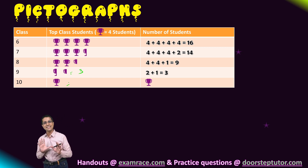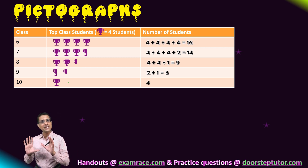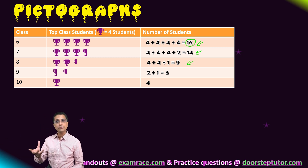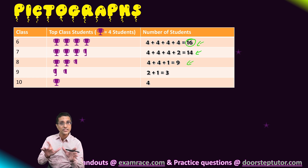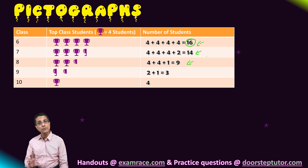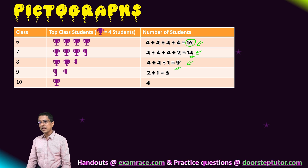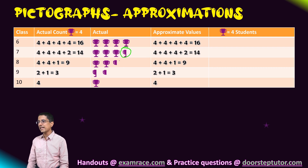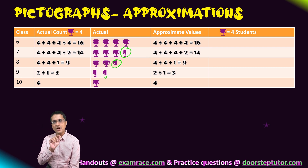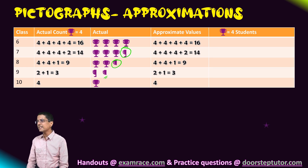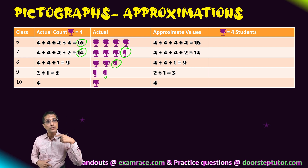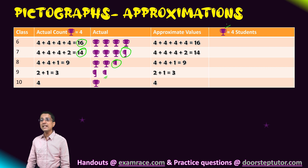The last value is 4, represented by one full trophy. So we cannot always assume our values will be multiples of four. When they are not, we have two choices: the first is to invent new symbols like we just did; the second is to approximate the value and represent it using only complete trophy symbols.